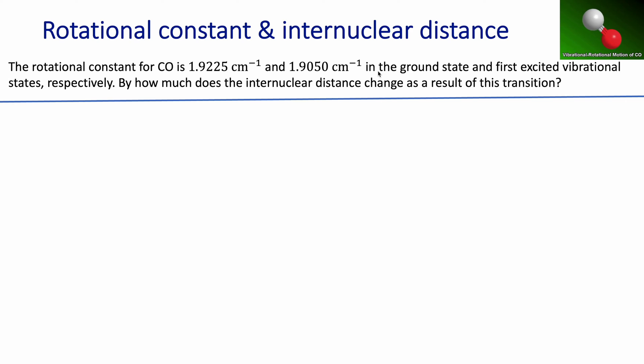The problem is telling us that for each vibrational state you can have an associated rotational constant. We're given two rotational constants in terms of wave numbers — the first associated with the ground state, and the second with the first excited vibrational state.